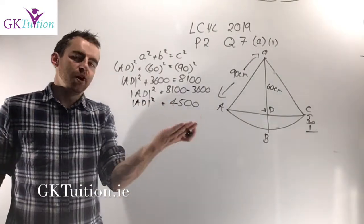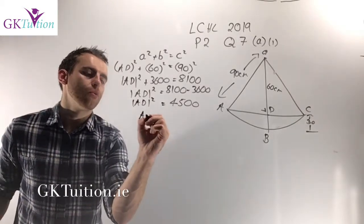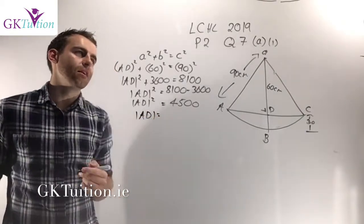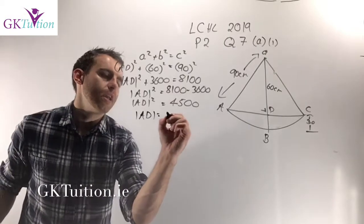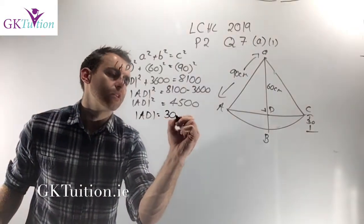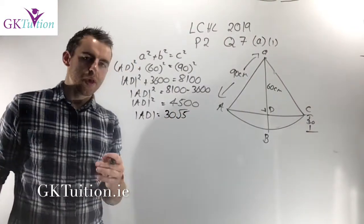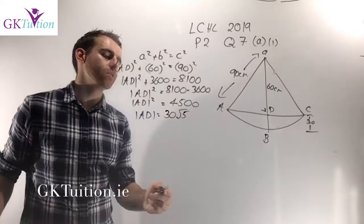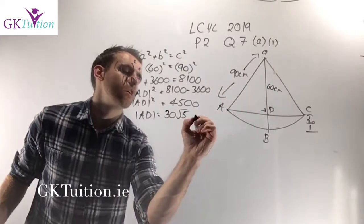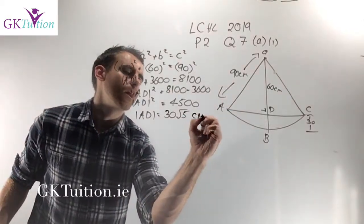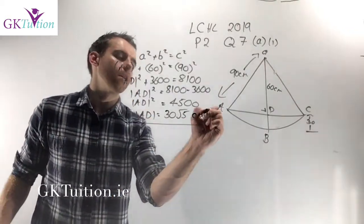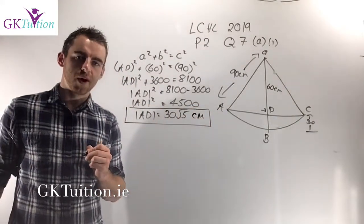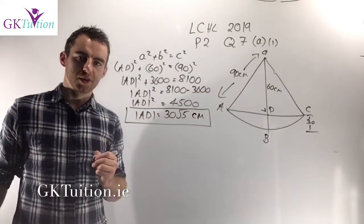Taking the square root of both sides, AD works out as 30 root 5. Since the measurements were in centimetres, the final answer is AD equals 30 root 5 centimetres.